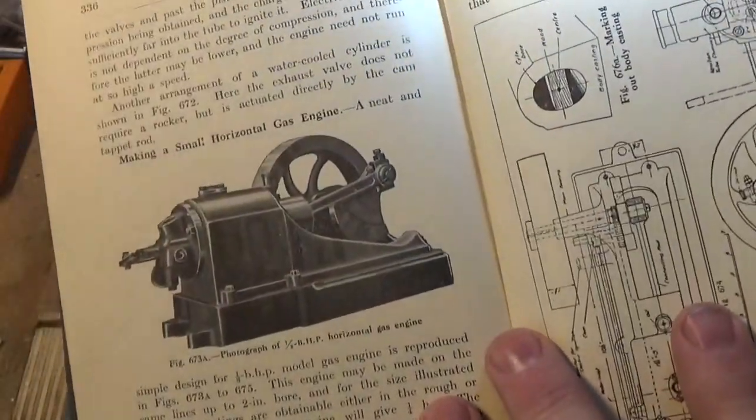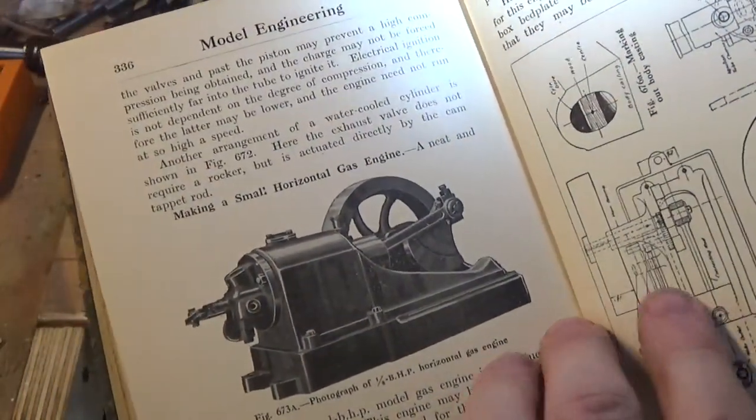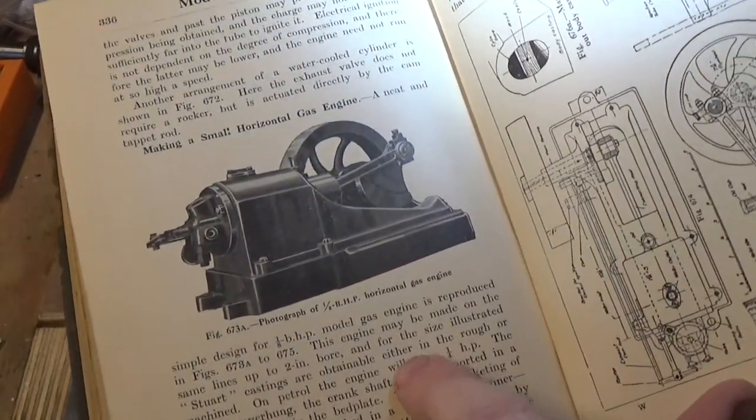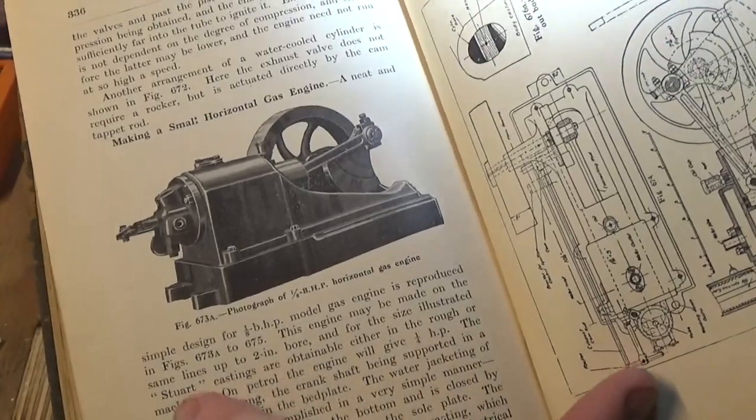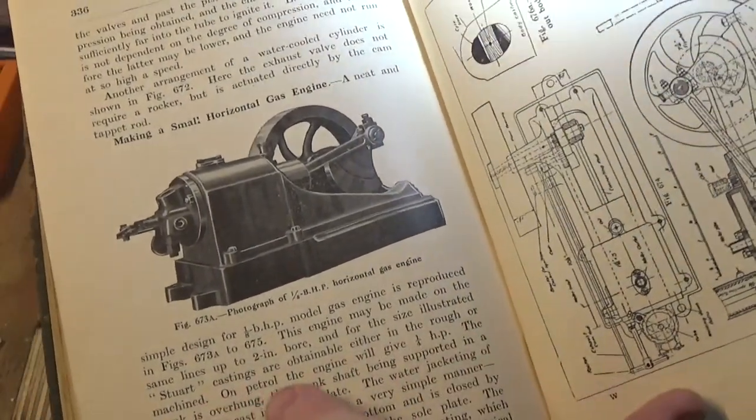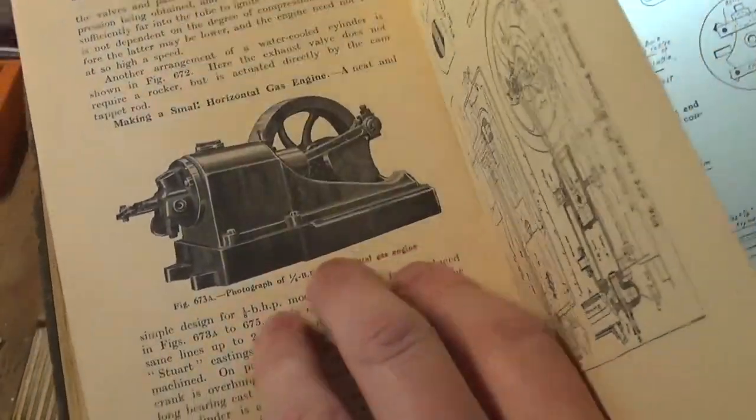We have a photograph of an eighth brake horsepower horizontal gas engine. It says the engine can be made up in the same lines up to two inch bore, and for the size illustrated, Stuart castings are obtainable either in the rough or machined. A petrol engine will give quarter horsepower and gas or oil, I guess it's eighth horsepower.